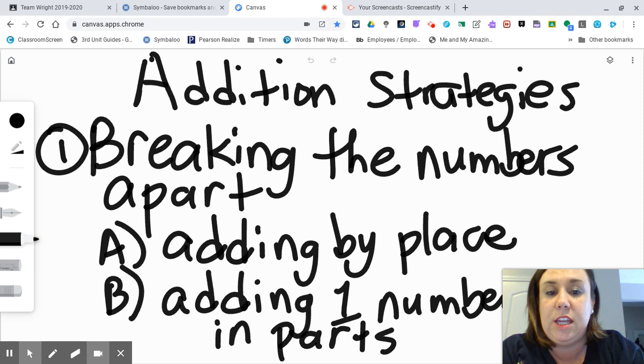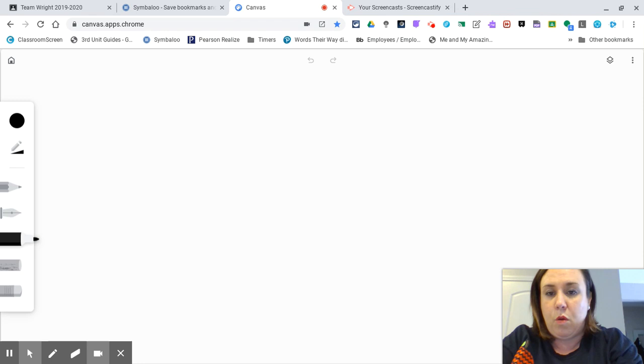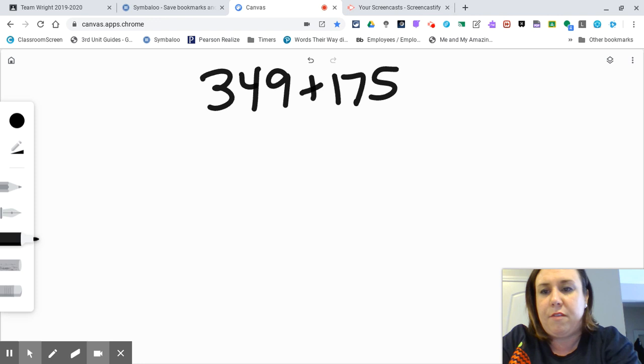We have kind of two options with breaking the numbers apart. You can either add by place value or you can add one number in parts. So what does that look like? I'm going to show you what those look like with the same equation: 349 plus 175. A is breaking the numbers apart by place value.